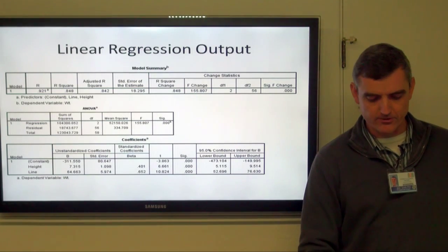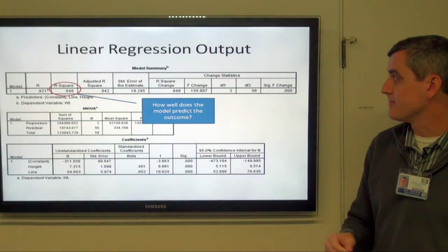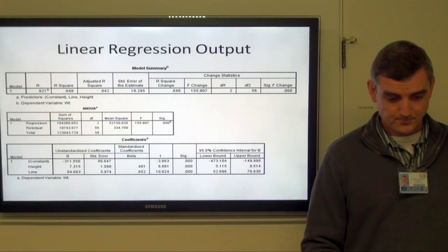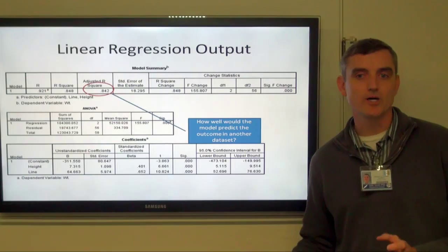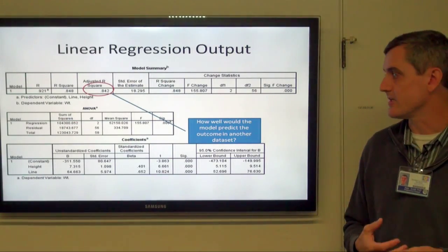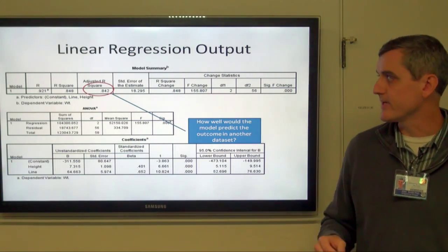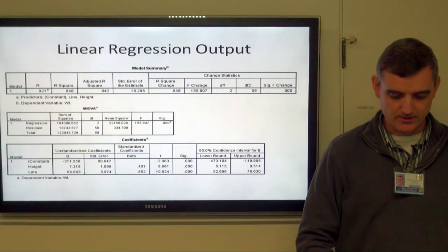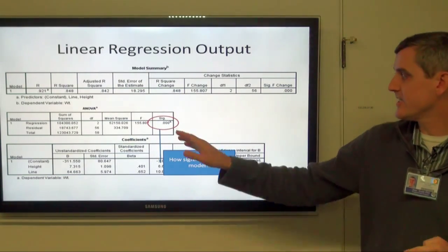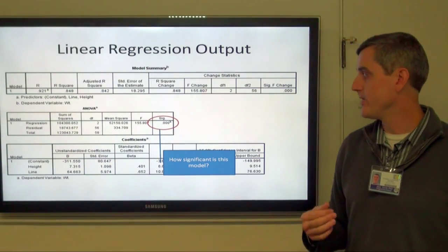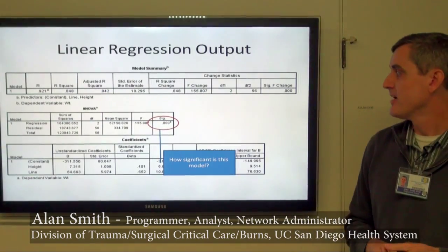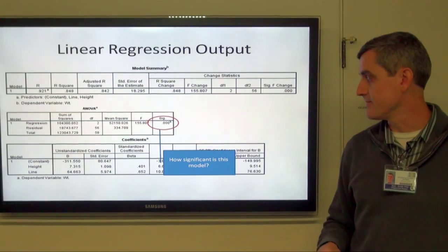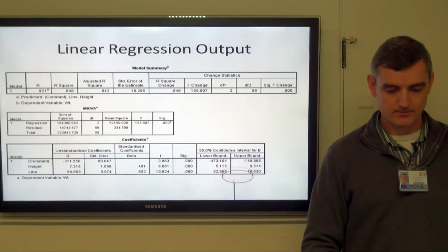Here's what the linear regression output looks like. r-squared is how well the model predicts the outcome — overall, how good is this model — and at 84%, that's pretty good. The adjusted r-squared is how well that model would predict if applied to a different set of observations; it's always a little bit lower. The ANOVA table is the test of the model to see how it differs from chance, and this model is highly significant.